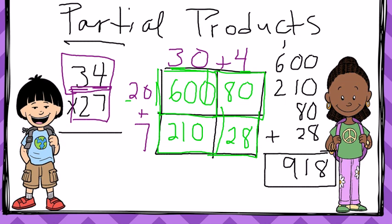And this is partial products. So this is just another strategy you can use to do double digit times double digit. And actually you can do bigger numbers than that too, which we'll talk about at another point. But this is how you can do double digit times double digit using the partial product strategy.